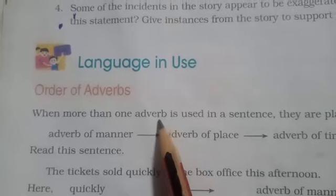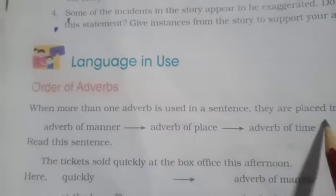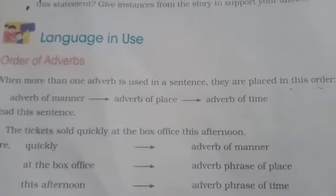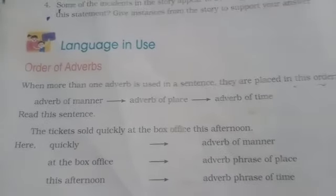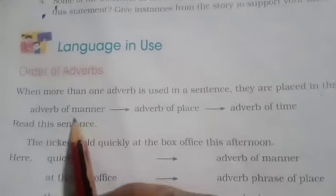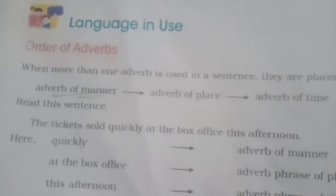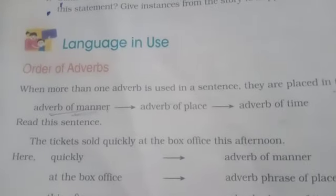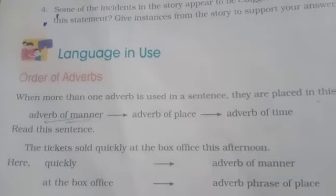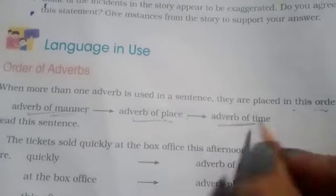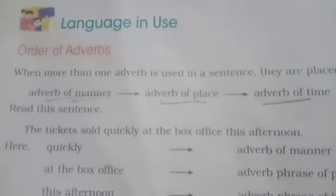Let's discuss the order of adverb. When more than one adverb is used in a sentence, they are placed in a specific order. Jab humare single sentence mein more than one adverb use hota hai, then how do we arrange them? First, we use adverb of manner — which gives the answer of 'how'. Then, adverb of place — 'where'. Then, adverb of time — 'when'.